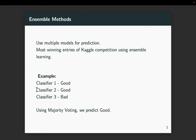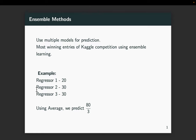The idea behind ensemble methods is similar to Kaun Banega Crorepati or Who Wants to Be a Millionaire. If you ask a question to the audience, more or less the audience poll will be correct — that's the law of averages. If you ask a lot of people, the majority should be able to get it correct, even though each individual is not an expert. So if we have three different classifiers on the same dataset and each is reasonably accurate and diverse: if the output is good, good, and bad, majority voting says the prediction is good. Similarly for regression, averaging three outputs of 20, 30, 30 is likely to work well.